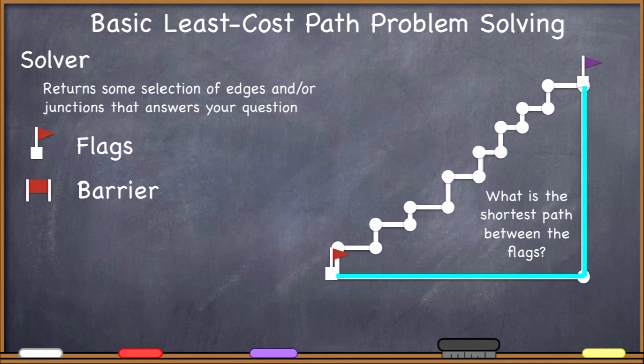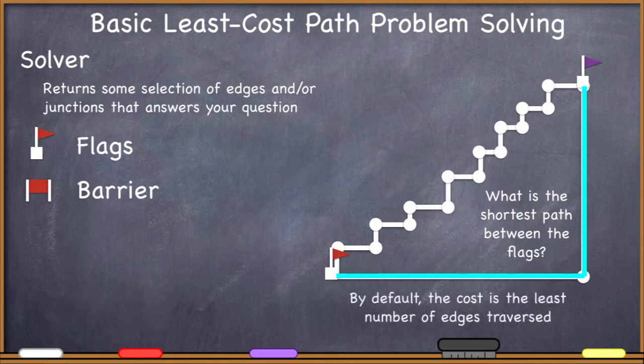Now you might be thinking — are you sure that's the least cost path? Because we kind of have a right triangle here, and we know that the hypotenuse of a right triangle is the shortest distance between two points, not going along the other two sides. The network between the red and purple flags more closely follows the hypotenuse, so you'd think that would be the shortest path — yet this is what the computer returns. That's because by default the cost to get from one point to another on the network is calculated by the least number of edges traversed. The computer wants to know: what's the least number of edges I have to traverse to get from flag to flag?